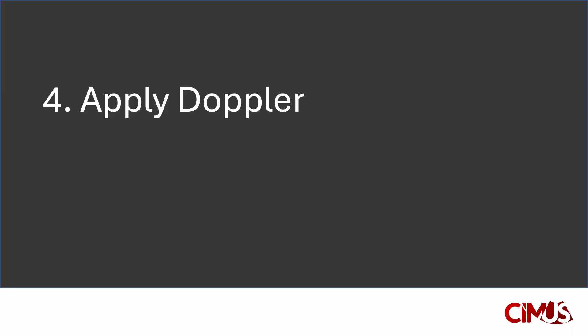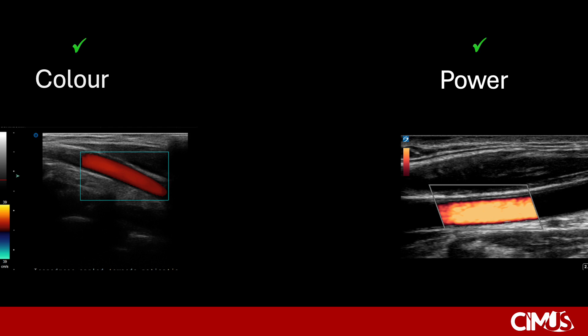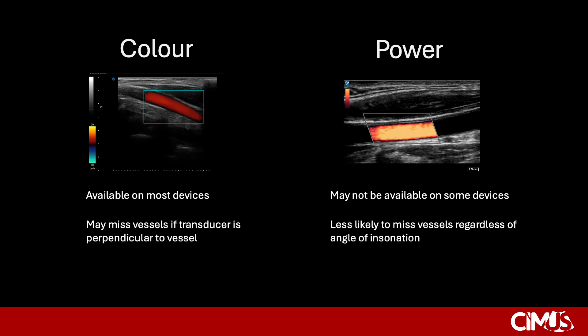Now let's discuss Doppler. There are three main types of Doppler that many, but not all, devices are equipped with: color, spectral, and power. The Doppler modalities relevant for identifying and ruling out vessels prior to performing a procedure are color and power. Color Doppler is typically available on most devices, whereas power Doppler may not always be available, particularly on older devices. Color Doppler may miss vessels if the transducer is perpendicular to the vessel, or at a 90-degree angle of insonation. Power Doppler is less likely to miss vessels regardless of the angle of insonation. Please see previous Doppler teaching sessions for a further review of this topic.